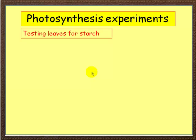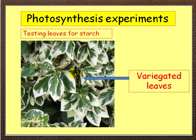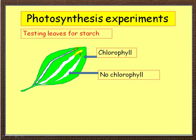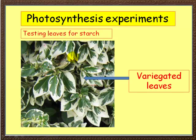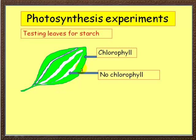Another experiment is testing leaves for starch. We classically use variegated leaves. A variegated leaf has white bits and green bits. In the green bits there is chlorophyll; in the white bits there is no chlorophyll. So I wonder where starch is produced?